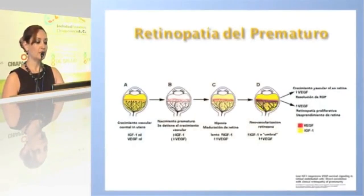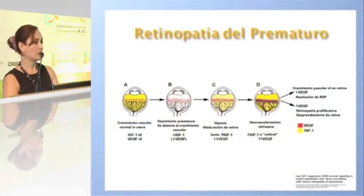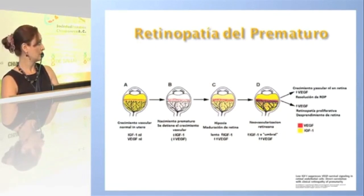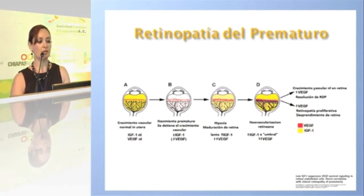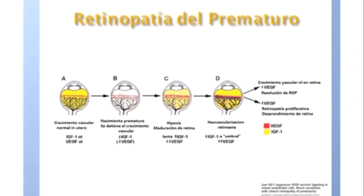Within the pathophysiology, it is described that during embryological development, during pregnancy, factors such as vascular endothelial growth factor type 1 (VEGF-1) and insulin-like growth factor promote vascular development in the retina. During premature birth, there is a drop in these factors, which causes hypoxia in the retina.